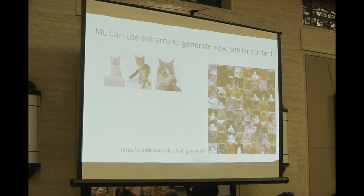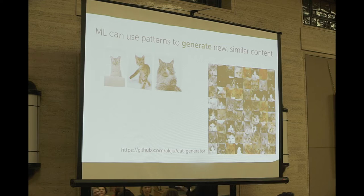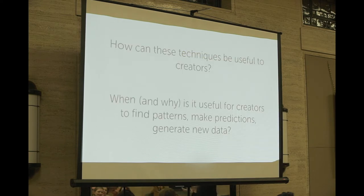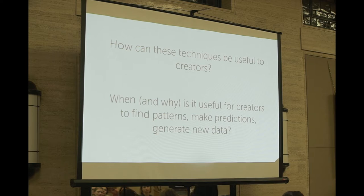Of course, this doesn't just work for cat photos — we could take photos of great works of art and try to generate new things, or take melodies from pop songs and try to generate new ones. But personally, I'm not that interested in using machine learning to just look at what people have done before and try to do more of the same. I'm more interested in how these techniques can be useful to human creators to make something new — when and why it's useful for creators in music, art, or other domains to find patterns, make predictions, or generate new data from their inputs.